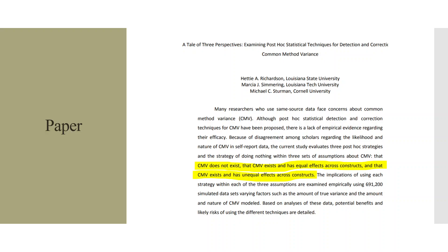There is one paper titled 'A Tale of Three Perspectives: Examining the Post-Hoc Statistical Techniques for Detection and Correction of Common Method Variance.' In this paper, the authors discuss three sets of assumptions about common method variance: first, that common method variance does not exist; second, that common method variance exists and has equal effects across the constructs; and third, that common method variance exists and has unequal effects across the constructs.